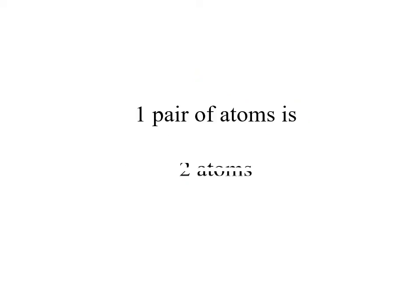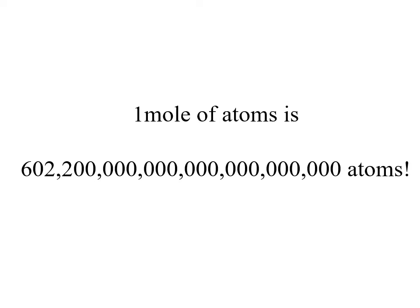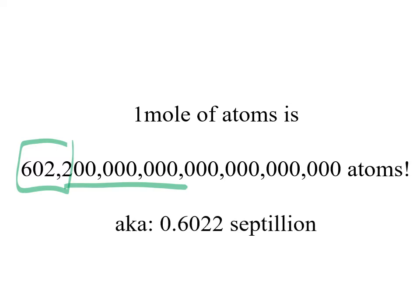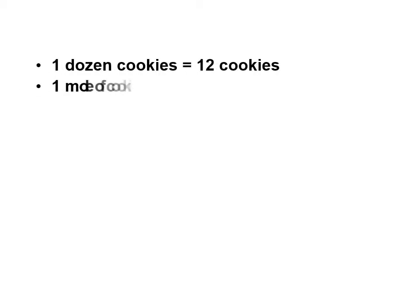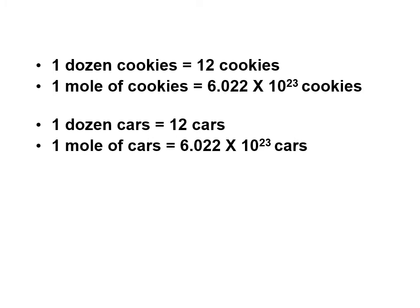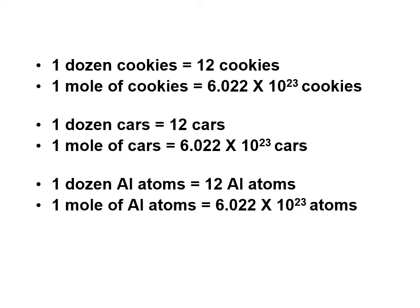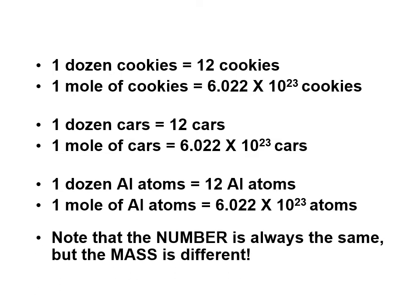A pair of atoms would be two atoms. A dozen atoms would be 12 atoms. A mole of atoms would be 6.022 times 10 to the 23 atoms. A dozen cookies is 12 cookies; a mole of cookies is 6.022 times 10 to the 23 cookies. A dozen cars is 12 cars; a mole of cars is 6.022 times 10 to the 23 cars. A dozen aluminum atoms is 12; a mole of aluminum atoms is 6.022 times 10 to the 23 aluminum atoms.